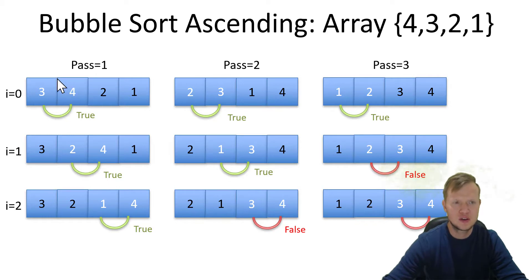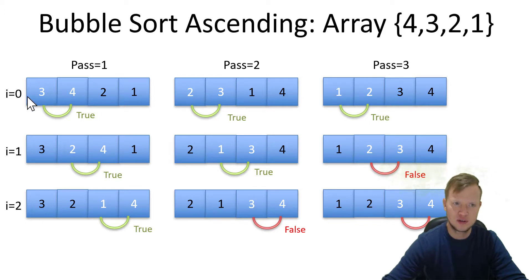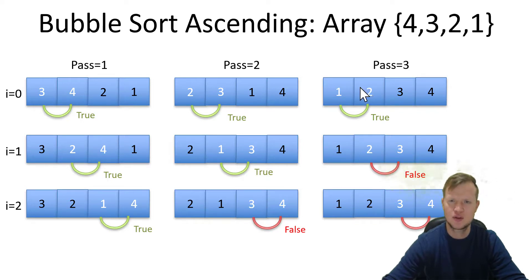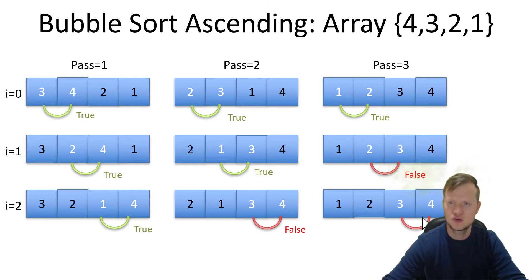On the first pass there will be three comparisons and in all three comparisons the element on the left will be smaller than the element on the right, so there will be swaps for all three comparisons. For the next pass there will be three comparisons again but only the first two will be true and the last one will not be true. Going to pass number three, only the first comparison is true and the rest are false.